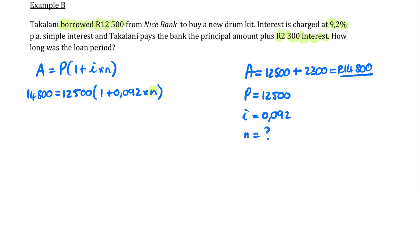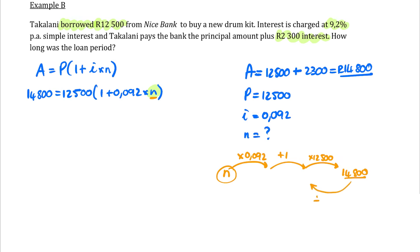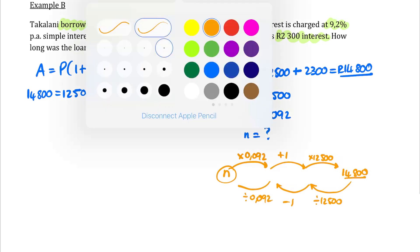How are we going to solve for N? Think back to solving an equation with only one unknown letter. According to BODMAS, the first thing that happens to N is that we multiply it by 0.092. After multiplying by 0.092, we add one, then we multiply by 12,500, and the answer is 14,800. So if we want to get back to N, we reverse these operations: divide by 12,500, subtract one, and then divide by 0.092.